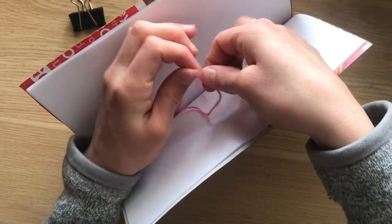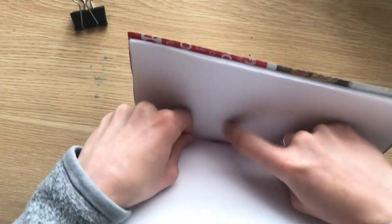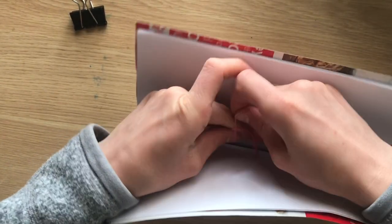And then you're going to double knot as tightly as you can in the center of that book. So there's one knot and then this is my second knot.